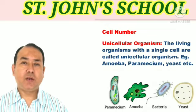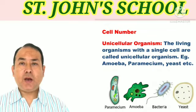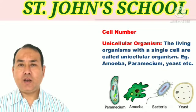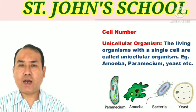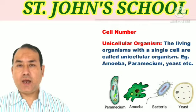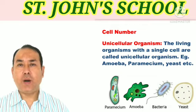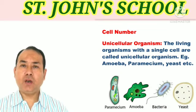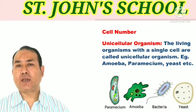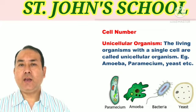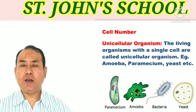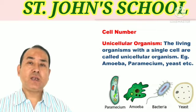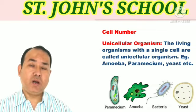Next, we'll discuss about cell number. Depending upon the number of cells present in the living body, all living organisms are classified into two groups: unicellular and multicellular organisms. Unicellular organisms are those organisms which have a single cell. The living organisms with a single cell are called unicellular organisms.